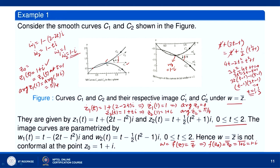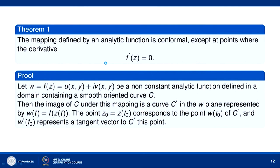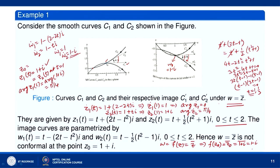At z₀, the angle from C₁ to C₂ is anticlockwise, while at w₀ the angle from C₁' to C₂' is clockwise. The angle is preserved in magnitude but not in sense. Therefore the mapping w = z̄ is not conformal at z₀ = 1 + i, and in fact w = z̄ is not conformal at any point of the complex plane.